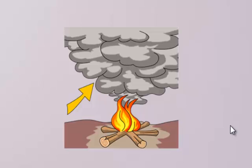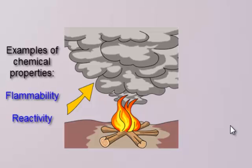A couple of examples of chemical properties would be flammability, obviously, the ability to burn. Ash and smoke can't burn, so they have the chemical property of non-flammability as opposed to the wood.